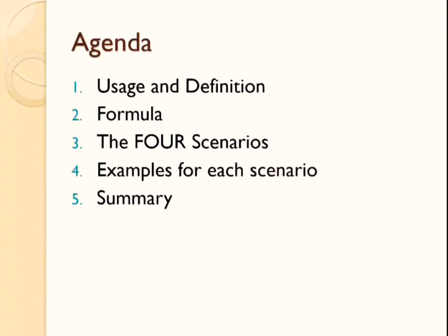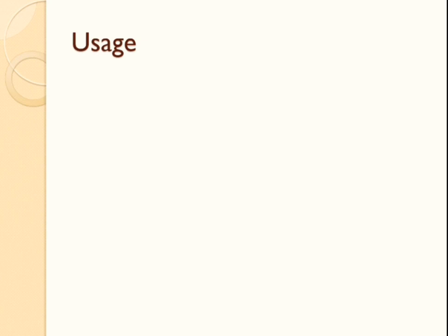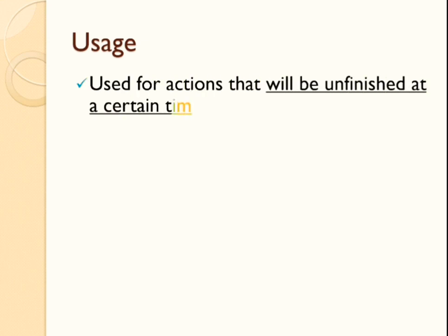So are you ready? Let's get started. You might be wondering, Professor, when should I use the future continuous tense? This tense is used for actions or events that will be unfinished at a certain time in the future, or for any time in the future if the time that it will finish is not fixed — that is, if it is uncertain as to when the event or action will finish. That is the first usage.